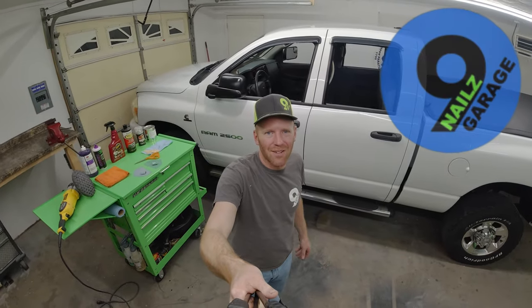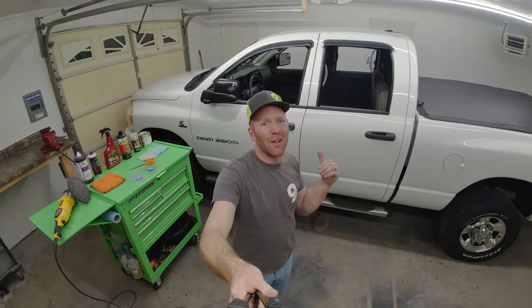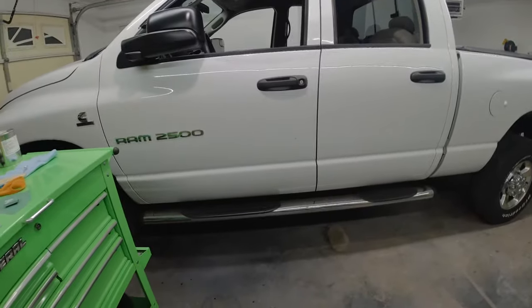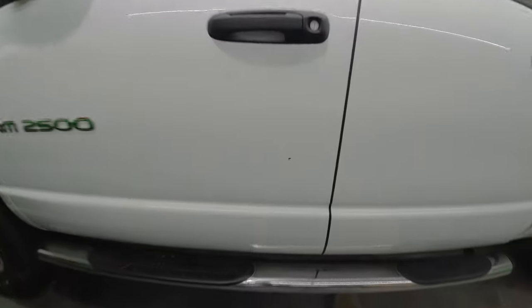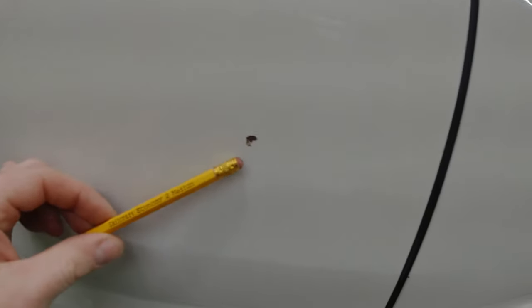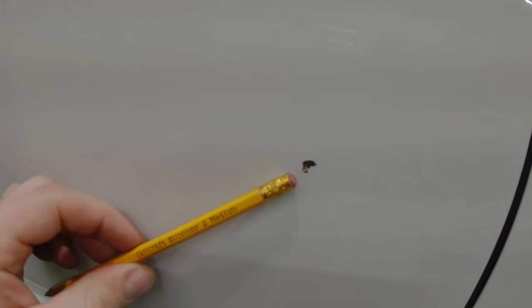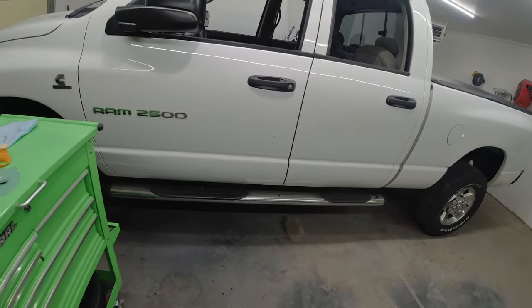Hello everyone and welcome back to Nine Nails Garage. Today I'm going to show you how to properly repair a rock chip in your vehicle's paint. The truck we're working on is my 2006 Dodge Ram and we've got a pretty good sized rock chip right in the driver's side door. It's about the size of a pencil eraser, pretty sightly, and you can see it from a good ways away.